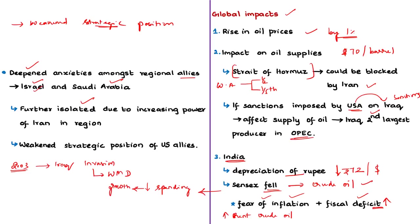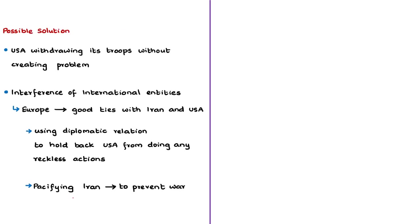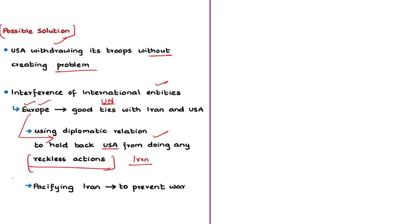Because of fiscal deficit concerns, as oil and gold are major imports of India, the government may need to spend more on these commodities, limiting spending elsewhere and potentially limiting economic growth in the medium term. The Reserve Bank of India would be compelled to cut interest rates to ensure enough liquidity in the economy. To avoid these consequences and reduce global impacts, America should withdraw its troops without further creating problems, and international entities such as the United Nations can interfere. Europe — which has good ties with both America and Iran — should use its diplomatic channels to hold back Trump's administration and pacify Iran to prevent an all-out war.